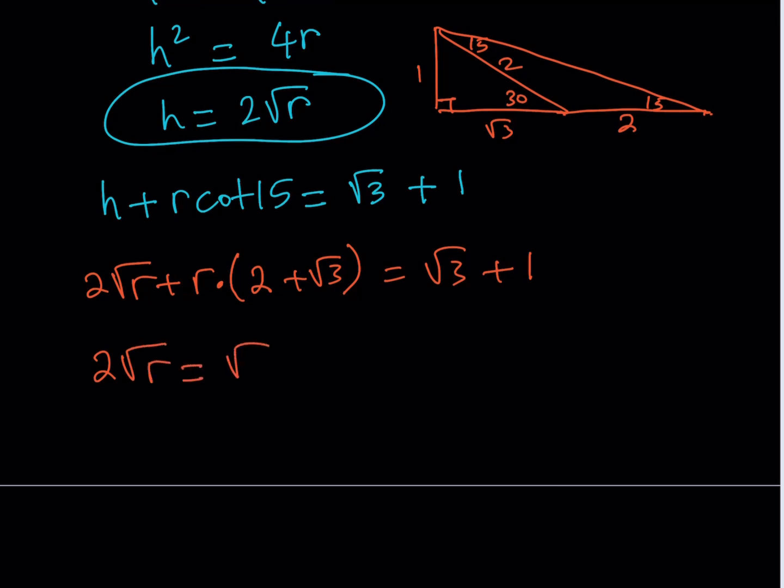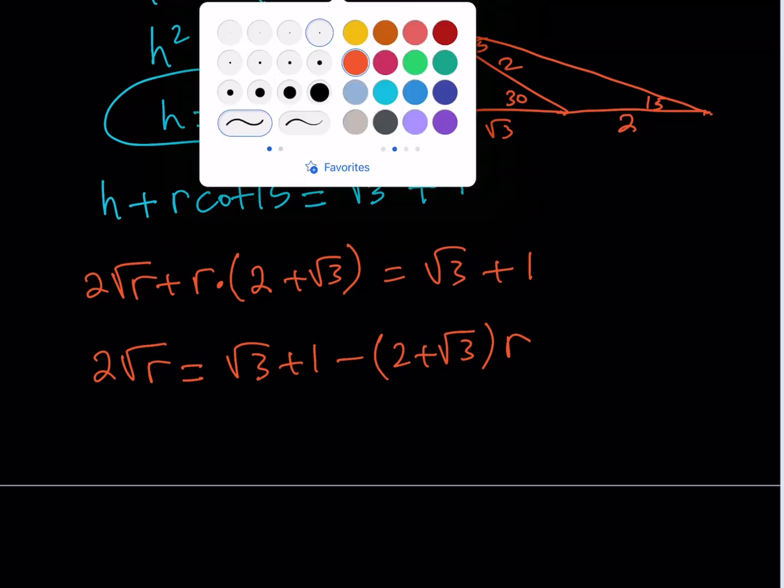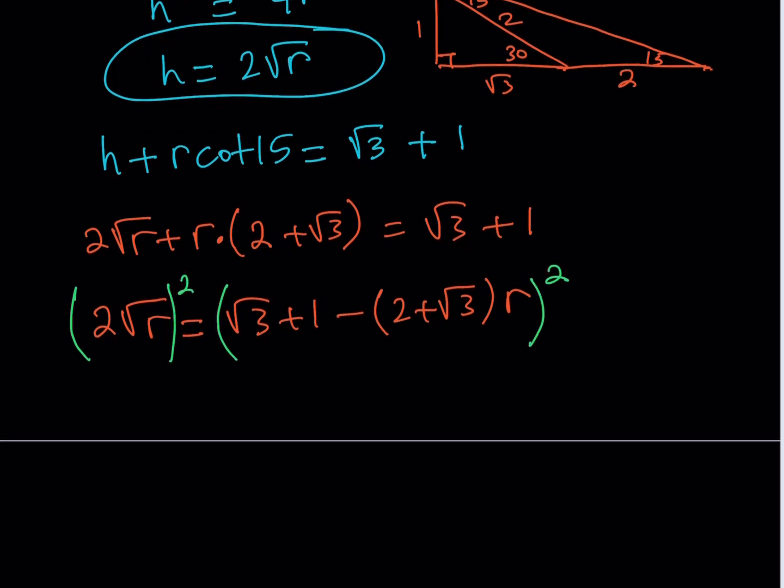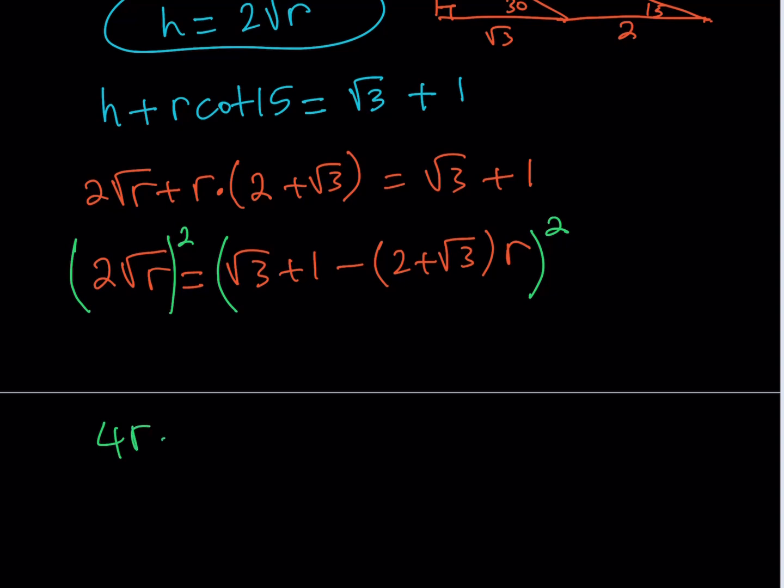And then from here, I'm not getting a nice expression, unfortunately, but it's okay. We can handle this. So, this is what I'm getting. Now, at this point, you want to get rid of the radical. I mean the square root of r, not the numbers. So, it would make sense if you actually go ahead and square both sides. Let's go ahead and do that. So, that should give me 4r. And this expression, now, even though it looks like there are four terms, you can treat it as a minus b, like this.